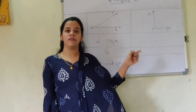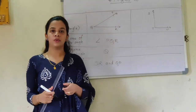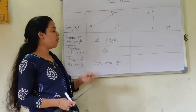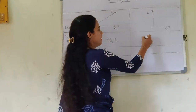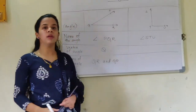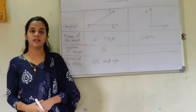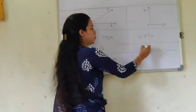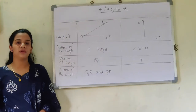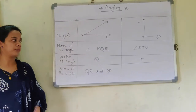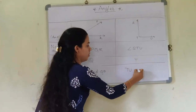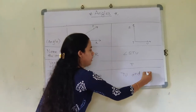We will proceed further and solve the next question: what is the name of this angle? The name of the angle is angle STU. Which is the vertex here? T is the vertex. And which are the arms? We are going to start from T — that is TU and TS.